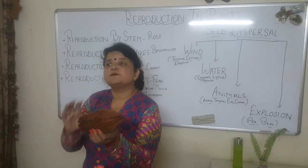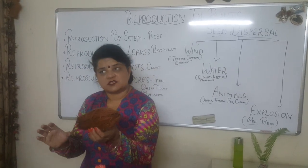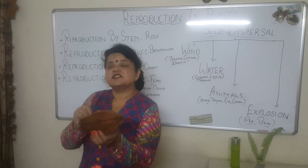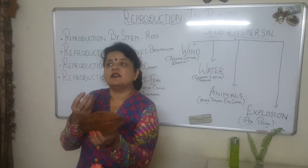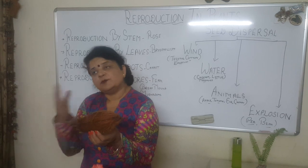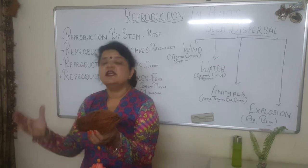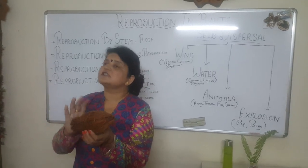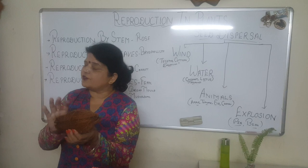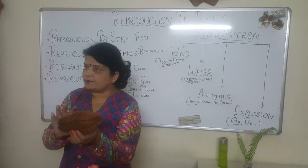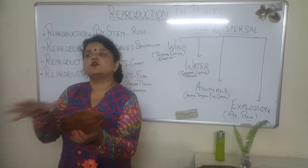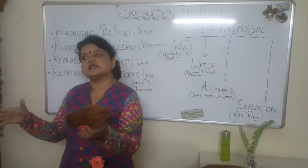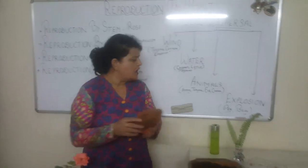Coconuts get dispersed by water. First, dispersal by wind is done when the seed is very light and easily blown away. The second is dispersal by water — coconut floats on water and as soon as it gets the soil, it starts germinating.